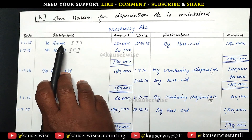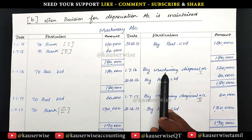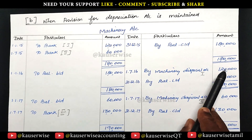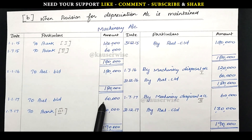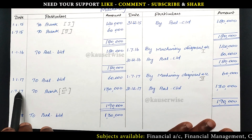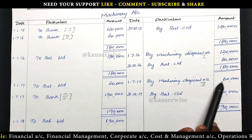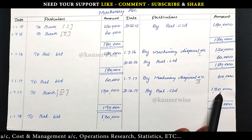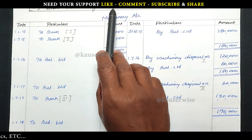In the second year we have sold the first machinery — value 1,20,000 — on 1st July 2016. That value will be transferred to the disposal account: machinery disposal account 1,20,000. We record only the original purchased value of machinery. The balancing figure is 60,000 and this will be the opening balance for the next year. In the third year we purchased another machinery for 1,30,000 on 1st July 2017. On the same day the second machinery was sold, so we transfer 60,000 to machinery disposal account. The balancing figure is 1,30,000, which becomes the opening balance for the next year.